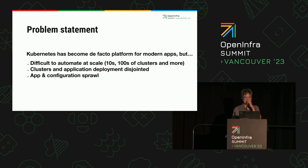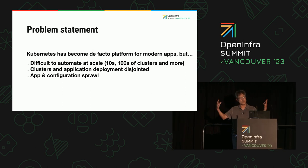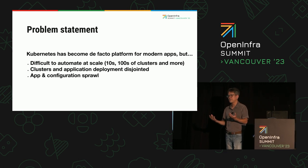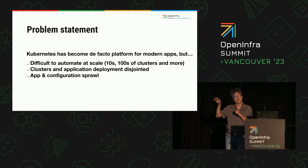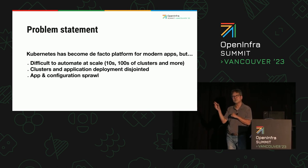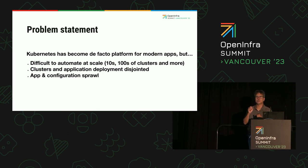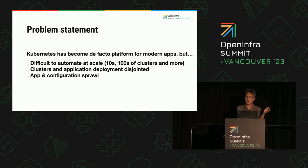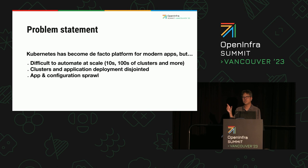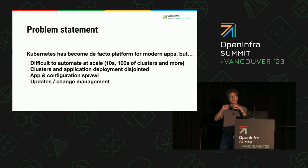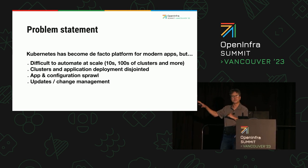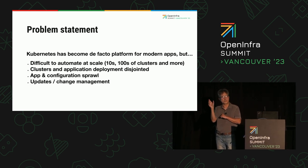This problem gets even worse when you talk about configuration sprawl. When you have so many objects to manage, you want to share a lot of settings and distribute them across many deployments. But once in a while, a cluster here or an application there needs a slightly different setting — and that's hard to manage. Many people will just copy and paste some YAMLs and make targeted changes, but this really breaks when you talk about updates. Change management is a big problem: you want to make a small number of changes but propagate them to a large number of deployments while maintaining individual customizations.